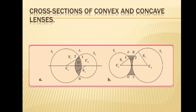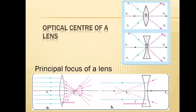The point inside a lens on the principal axis through which light rays pass without changing their path is called the optical center of the lens. Look at the diagram — for both the convex and concave lens, rays P1, Q1, P2, Q2 passing through O go along a straight line without deviation. Thus, O is the optical center of the lens.